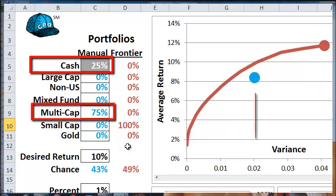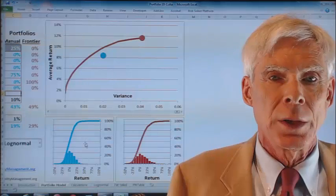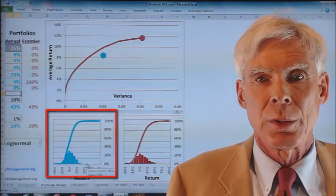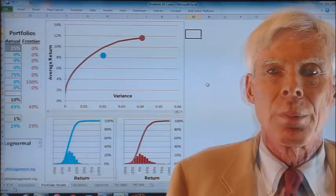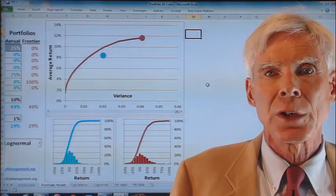The blue dot displays the variance, or risk, of the portfolio on the x-axis and the average return on the y-axis. The histogram down here shows us the distribution of return. The red line is the efficient frontier.